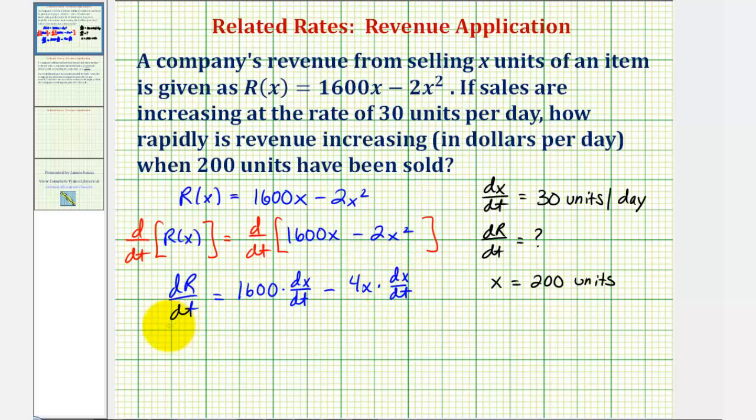Now we can find dR/dt using dx/dt = 30 and x = 200. We have 1600 times 30 minus 4 times 200 times 30.